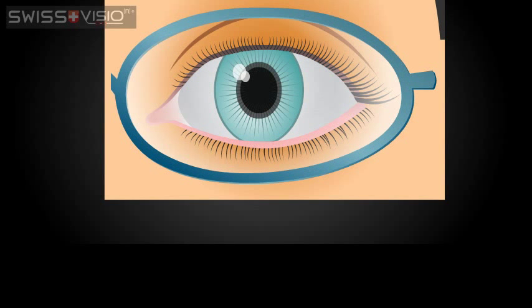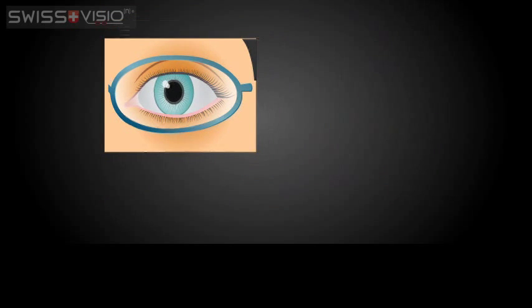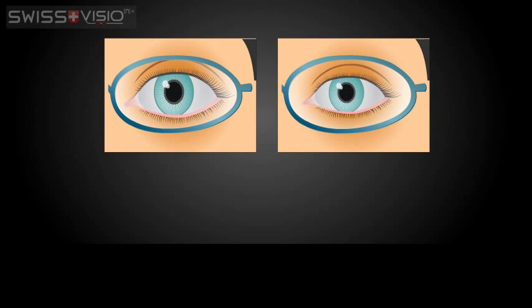Strong plus prescriptions will give the wearer a magnified, bug-eyes look. Aspheric lenses reduce these unwanted magnifications and give the wearer a more cosmetically pleasing experience.